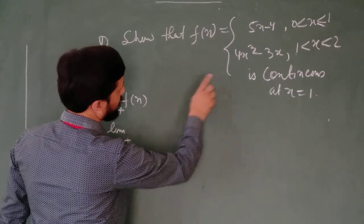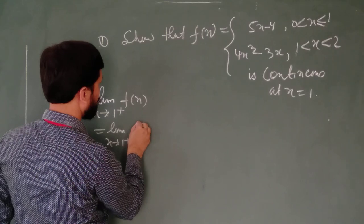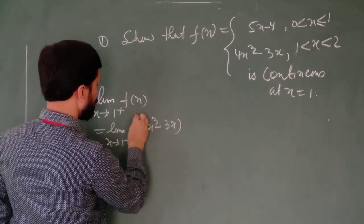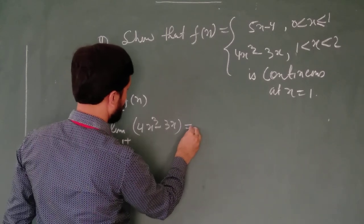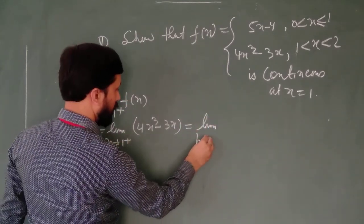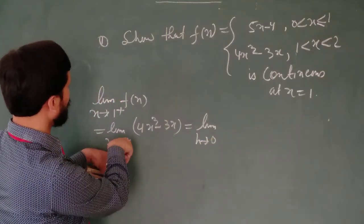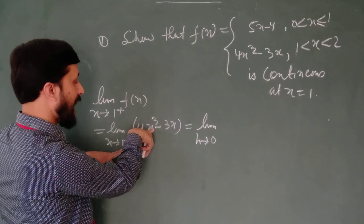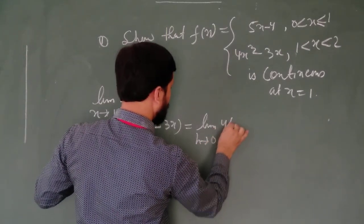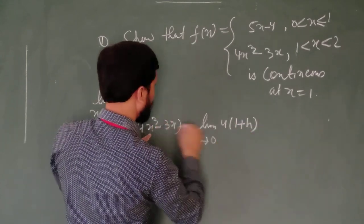Right hand limit, for more than 1, we have this expression. Now replace this with h tends to 0. And when you want to find right hand limit, what you have to do? You have to replace x with this plus h. So 1 plus h.